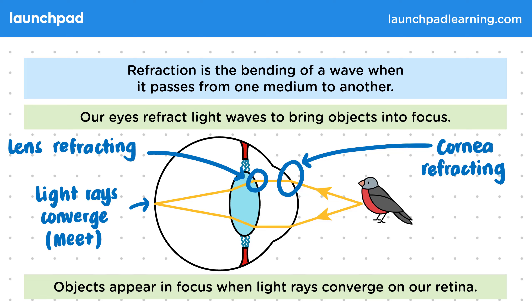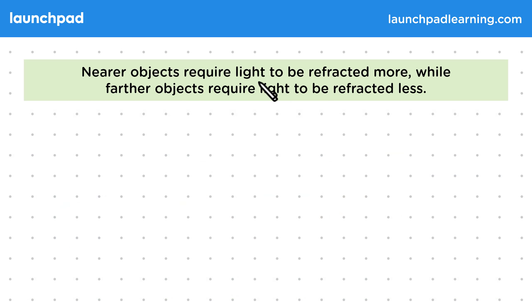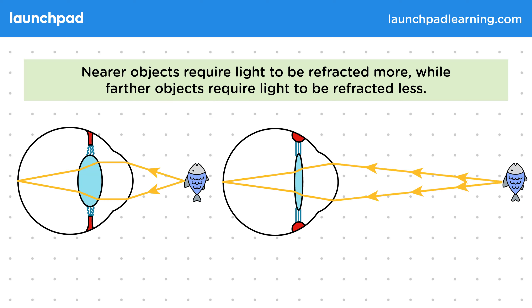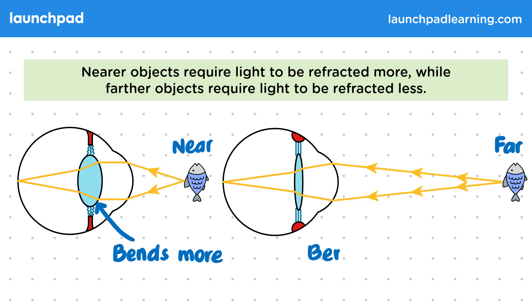So which objects require a thicker lens — near or far ones? Nearer objects require light to be refracted more, while farther objects require light to be refracted less. This is because near objects reflect light into the eye at a wider angle, which requires greater refraction in order for the waves to converge on the retina. A thicker lens allows this to happen. The opposite is true for waves from far away, which are nearly parallel by the time they reach the eye.